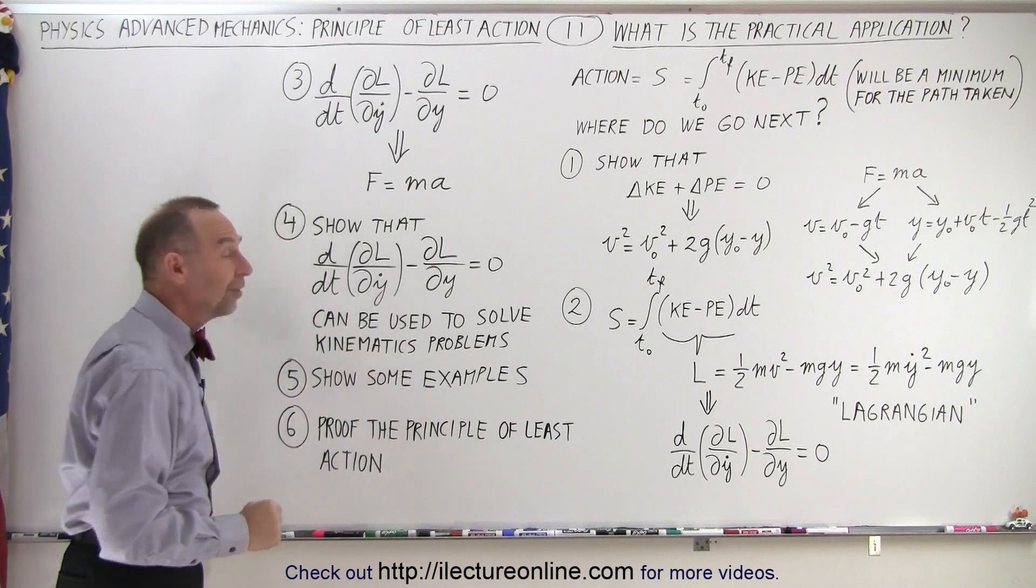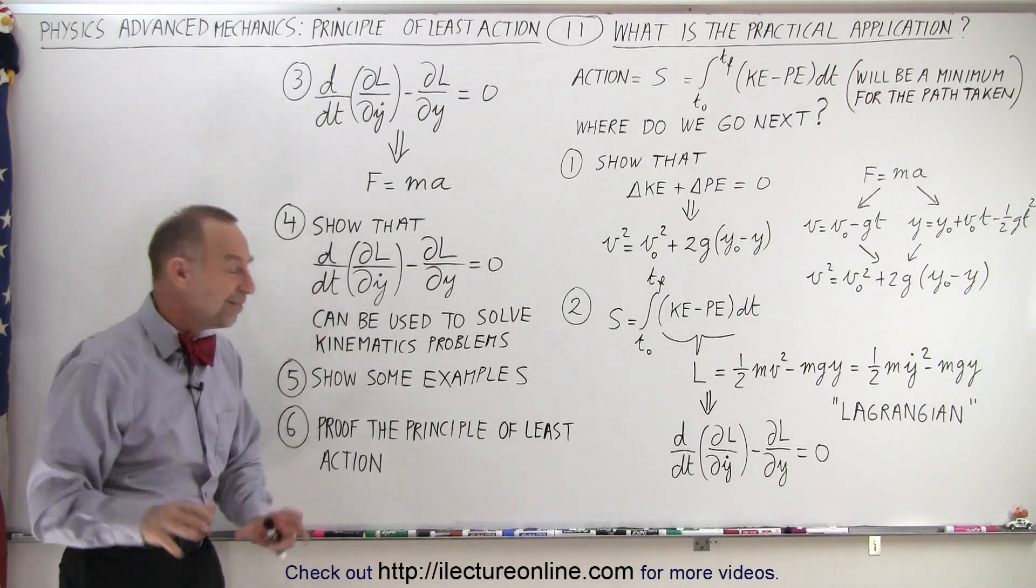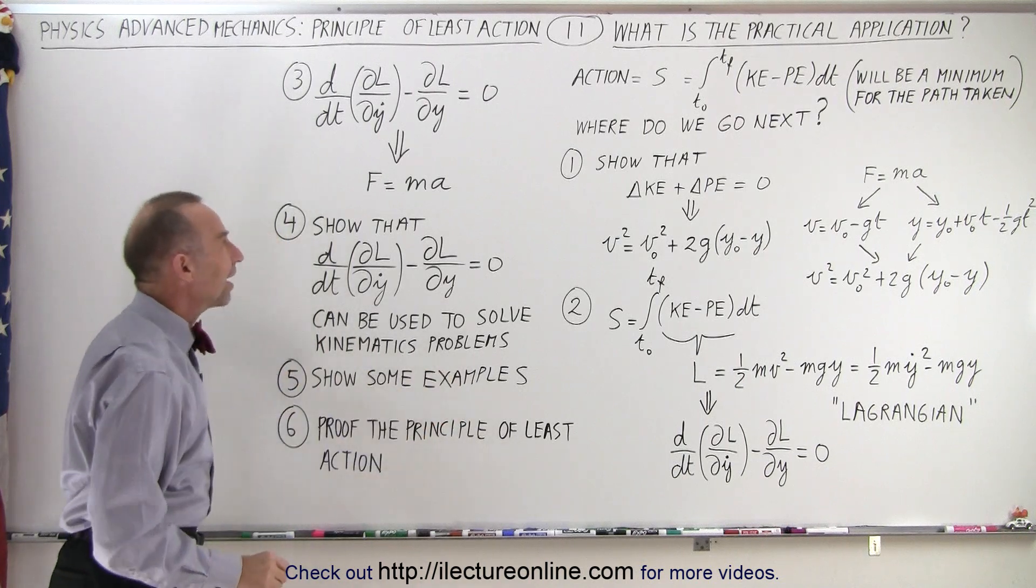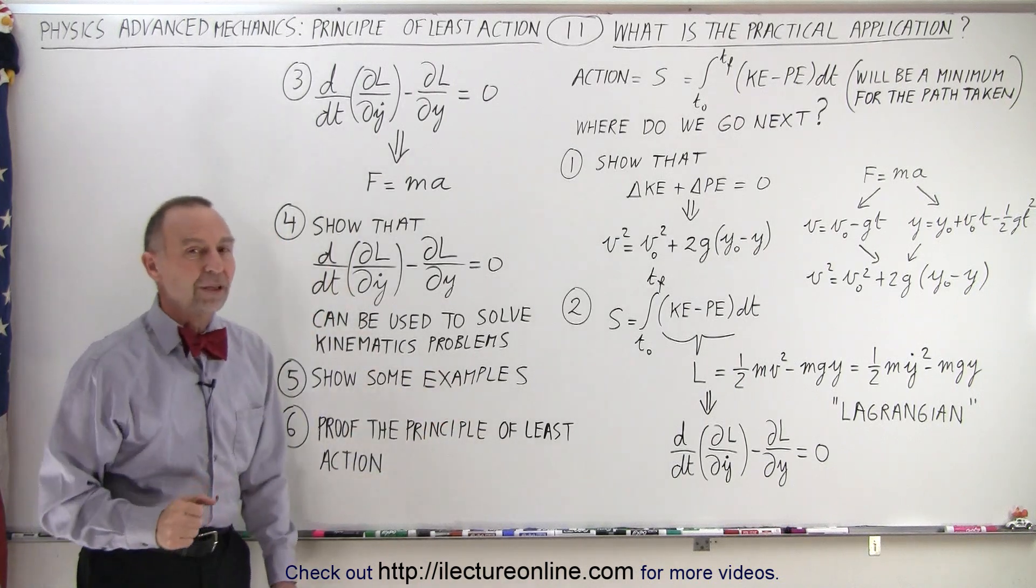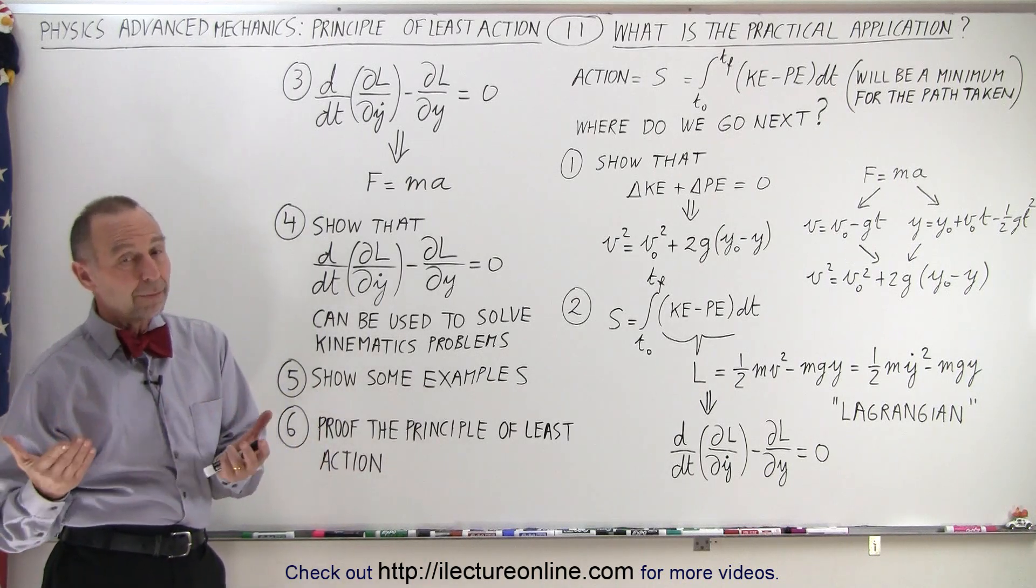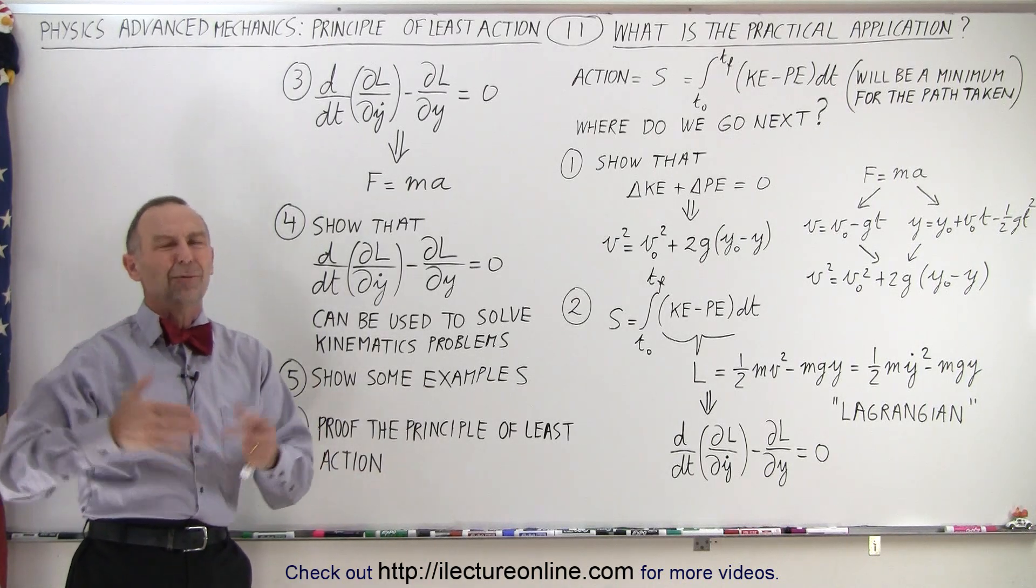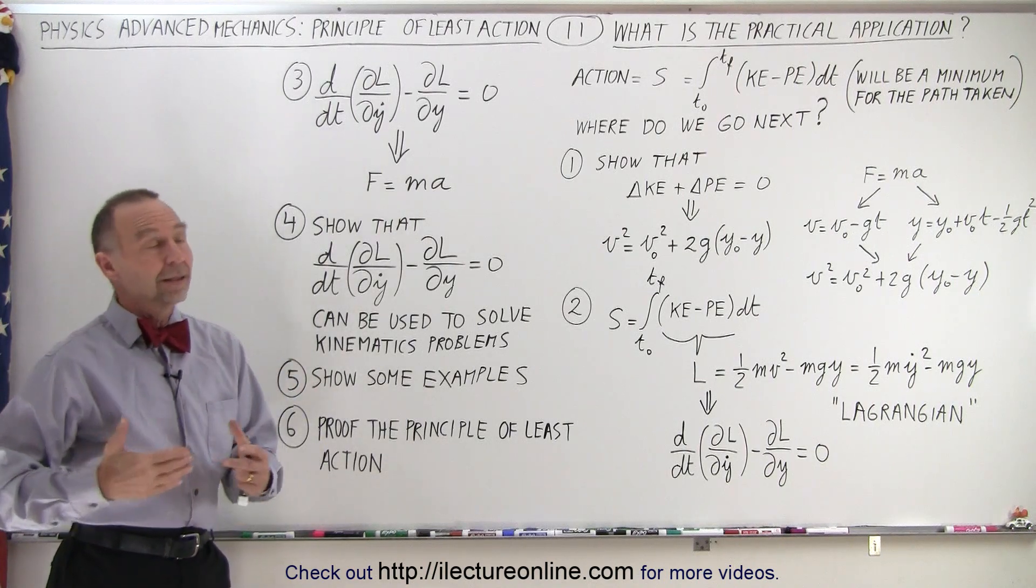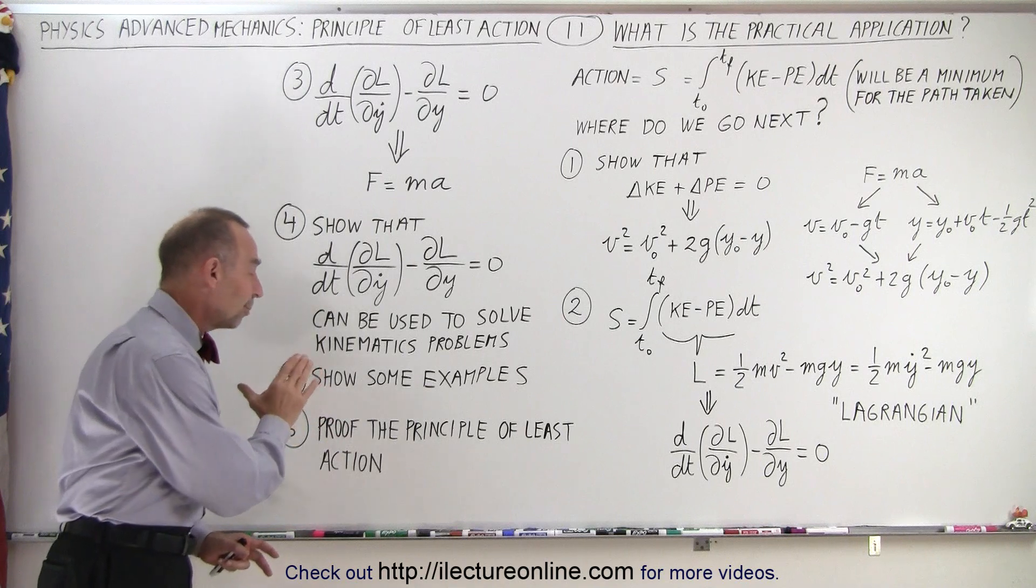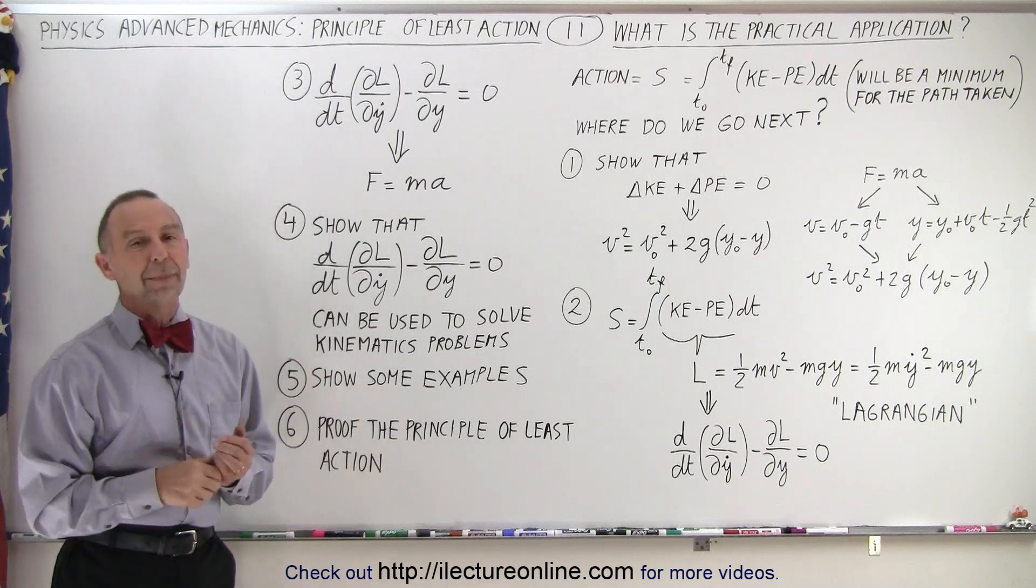So we'll show you some examples, and then eventually, at the end, we're going to show the proof of the principle of least action, where we started in the first place. We're actually going to prove that that's indeed the case. So far, we've only given you some examples where if you don't take the path that we know it's going to take, the integral is a bigger number. Now, you'll see that there's actually a proof to prove that, and we'll end up at that point.